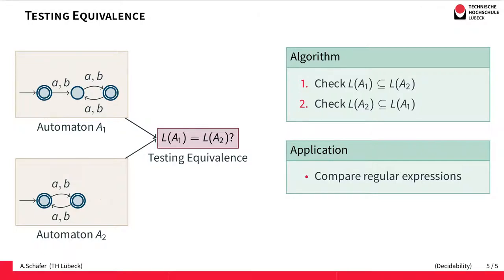Consider these two automata may accept the same language and to determine this automatically we can simply check whether the language defined by the first automaton is a subset of the second one and vice versa.